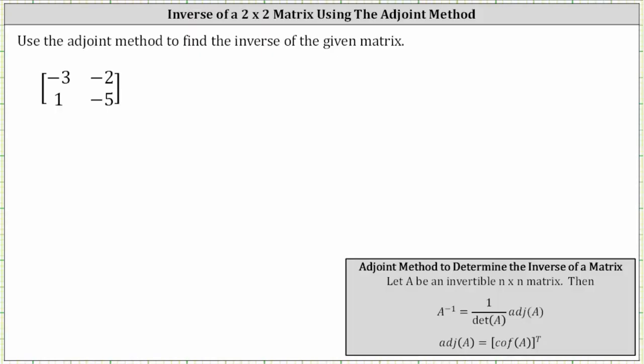We're asked to use the adjoint method to find the inverse of the given matrix. The formula for the adjoint method is shown below: if we let A be an invertible n by n matrix, then A inverse is equal to 1 divided by the determinant of matrix A times the adjoint of A, where the adjoint of A is equal to the transpose of the cofactor matrix.